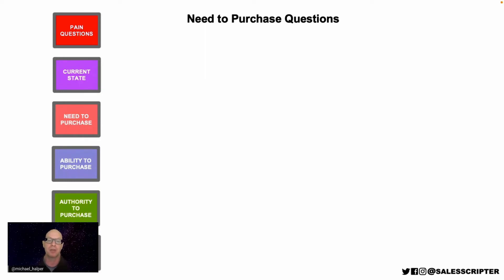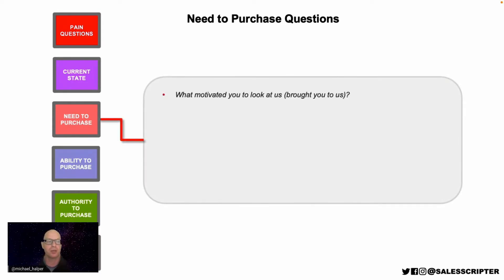What can happen in B2B with a high-ticket item is that the prospect may love what you sell, but when it comes time to get approval after demo after demo, they cannot get approval because their current system is working okay. Yes, your system works better, but their current system is okay — so they can't justify spending the money. They need to spend money on areas where things are not working well at all — where there's pain and a true need.